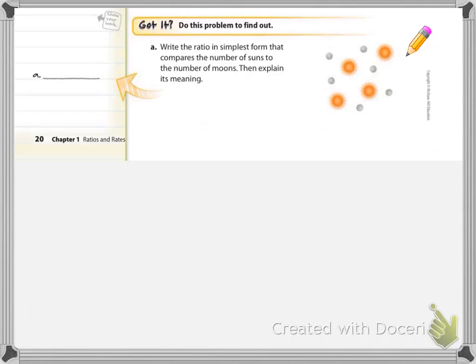I want you to try this Got It on your own. Do the problem right there in your workbook on page 20. The picture is there. You are to write the ratio in simplest form, comparing suns to moons. You need to write it in the three different ways of writing ratios, as mentioned on the previous page of notes. Pause, try the Got It, come back and see if you are correct.